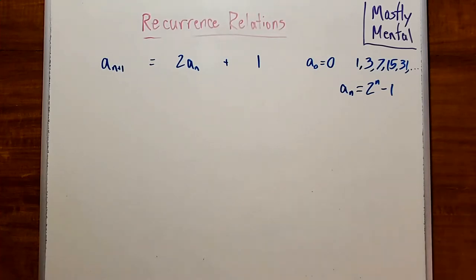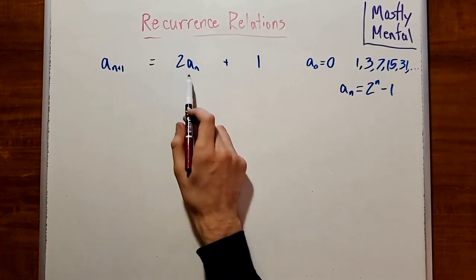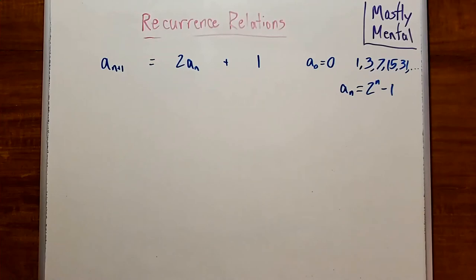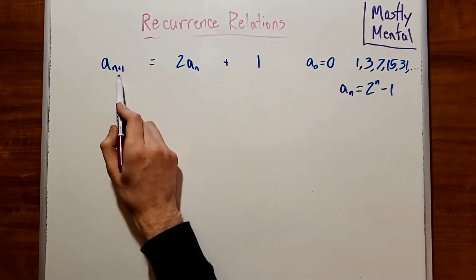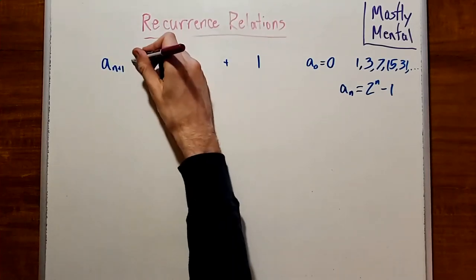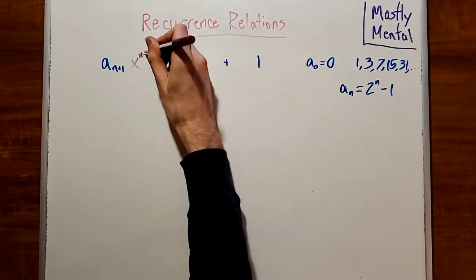To do so, we're going to follow a pretty standard recipe. First, we're going to multiply each of our terms in our recurrence by an appropriate power of x. In this case, the largest index on any of the a's is n plus 1, so we're going to multiply through by x to the n plus 1.